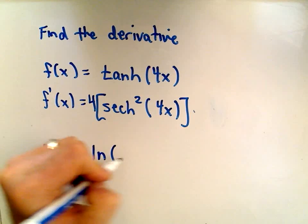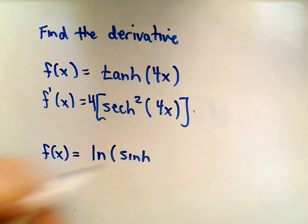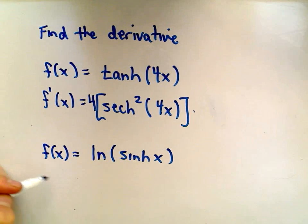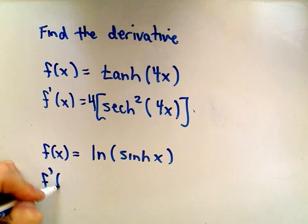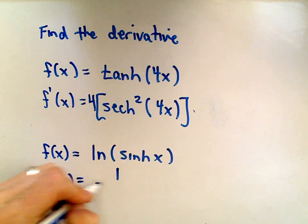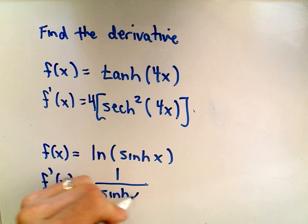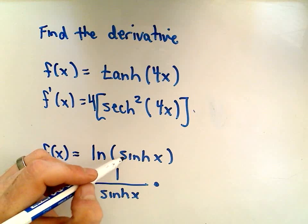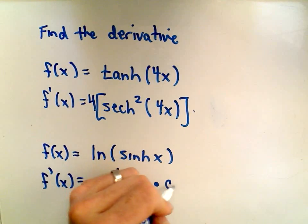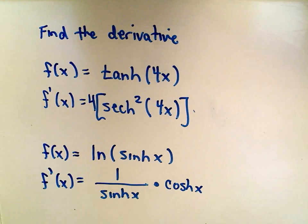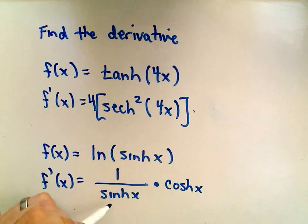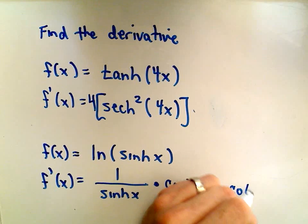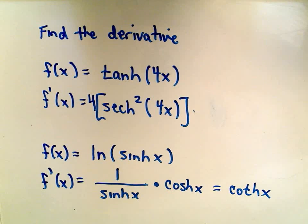Suppose our function is the natural logarithm of hyperbolic sine x. The derivative of natural logarithm gives us 1 over whatever's inside the logarithm. Then we multiply by the derivative of the inside using the chain rule. The derivative of hyperbolic sine is simply hyperbolic cosine. That gives us hyperbolic cosine over hyperbolic sine, which is the same thing as hyperbolic cotangent.